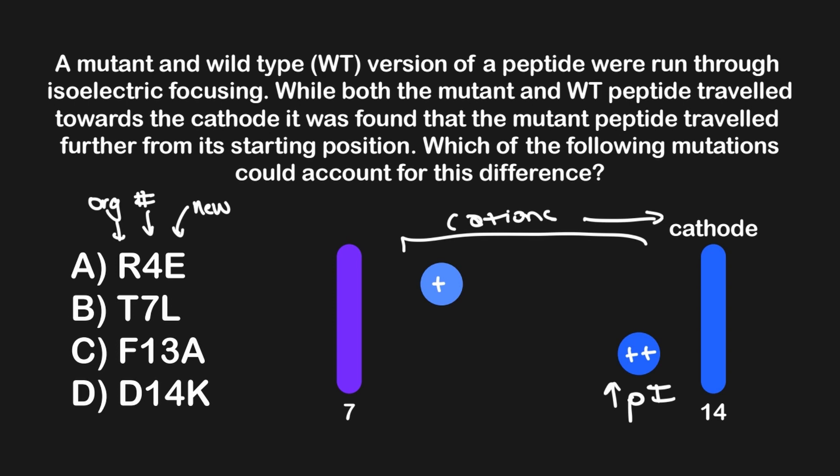Only answer choice D fits this, making it correct since this answer denotes a mutation that eliminated an aspartic acid residue and replaced it with a lysine residue in the mutated form of the protein. Answer A on the other hand flips this idea around and replaces a positively charged arginine with a negatively charged glutamic acid, making it incorrect since this would lower the PI. Answer choices B and C are also incorrect, and these mutations would have very little effect on the PI because they change uncharged residues to other uncharged residues.